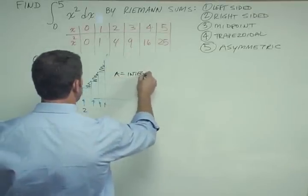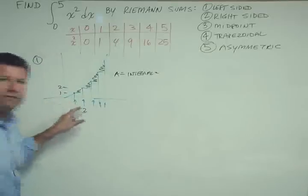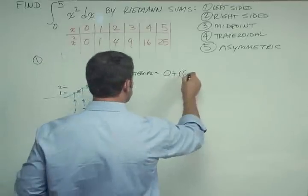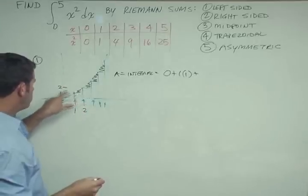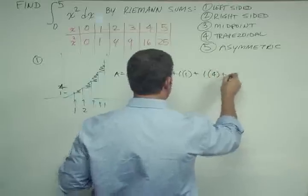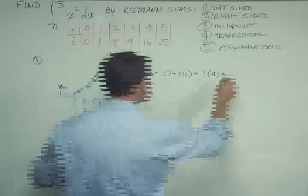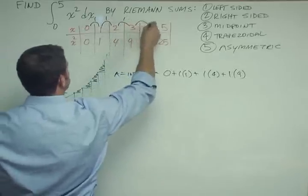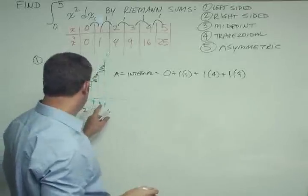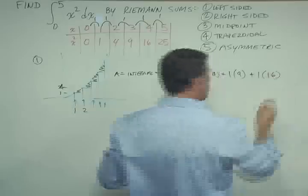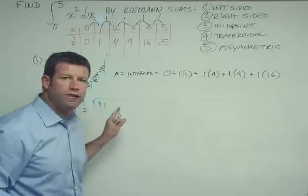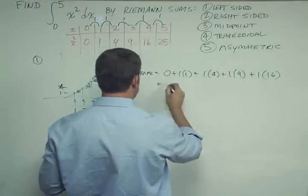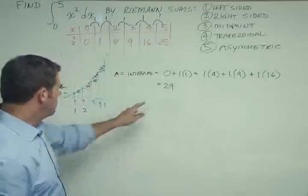So what we have here then is a sum. The area, which is the same as the integral, is going to be: the first piece is left-handed at 0, so that has no contribution. Then we have a width of 1 times a height of 1, then 1 times 4, then 1 times 9 — I can get that out of the table too. Each of these has a unit width of 1, and I'm just pulling the height off the left-hand side. So we have the value at 1, then 2, then 3, then 4. Notice I never even used the 25, because that's on the right-hand side and we're doing left-handed here. So that gives me a total of 0 + 1 + 4 + 9 + 16 = 29. That's the answer from a left-handed perspective.